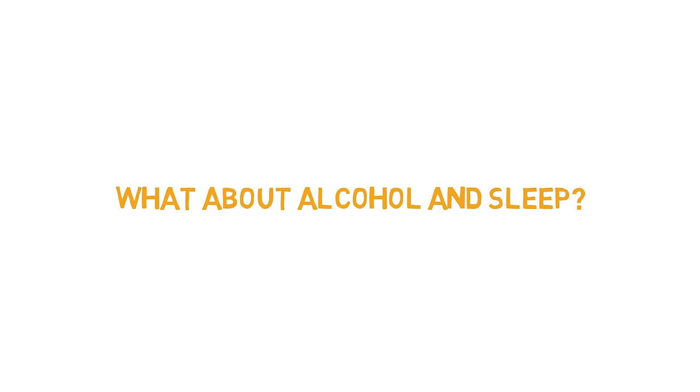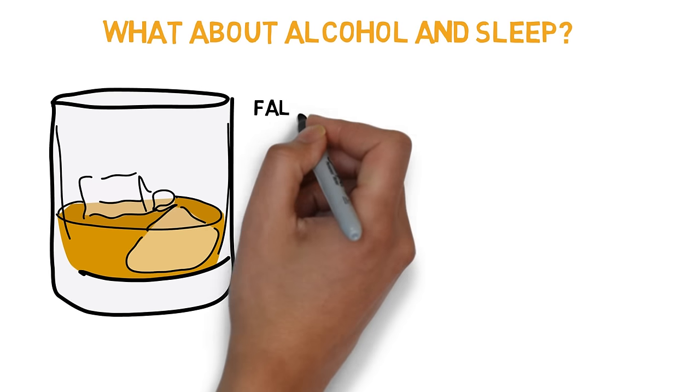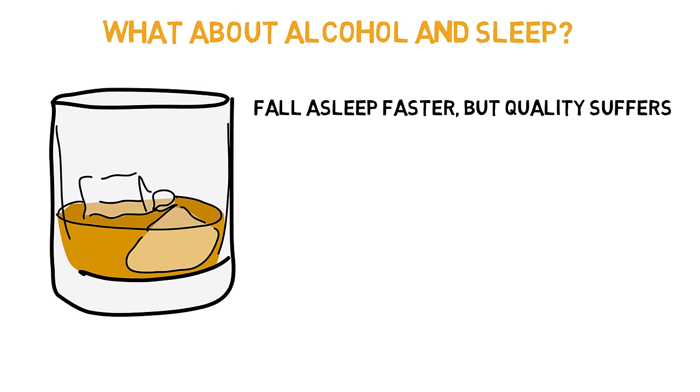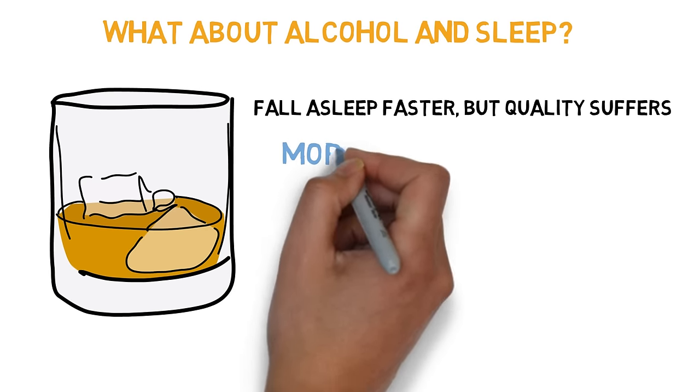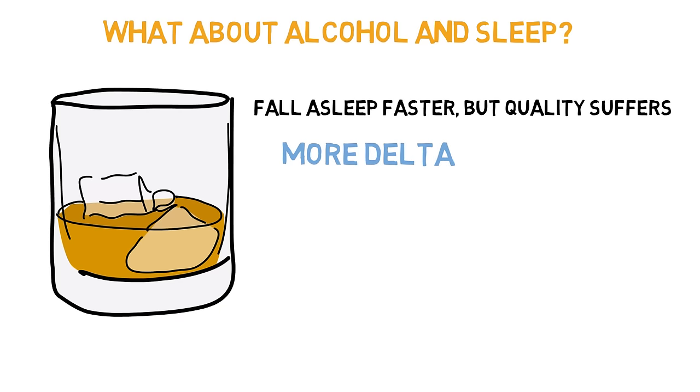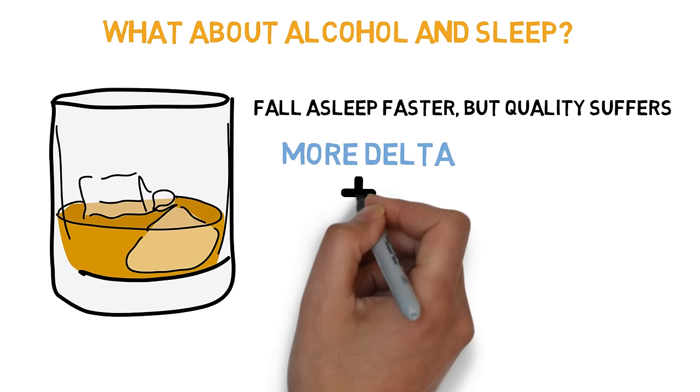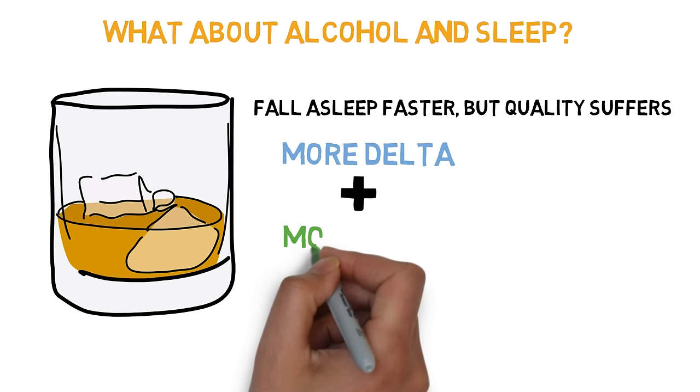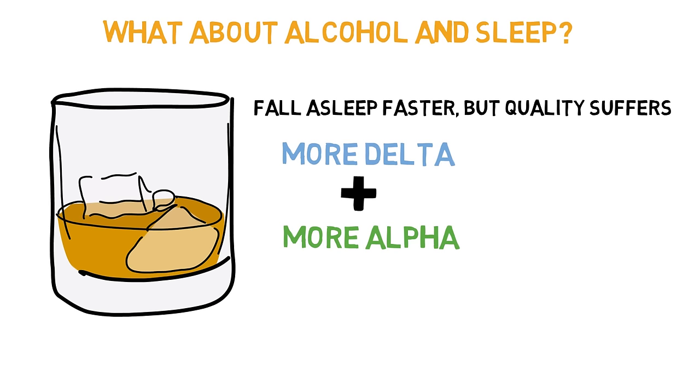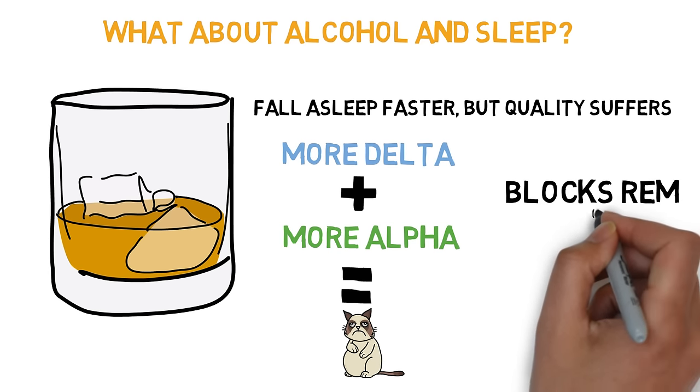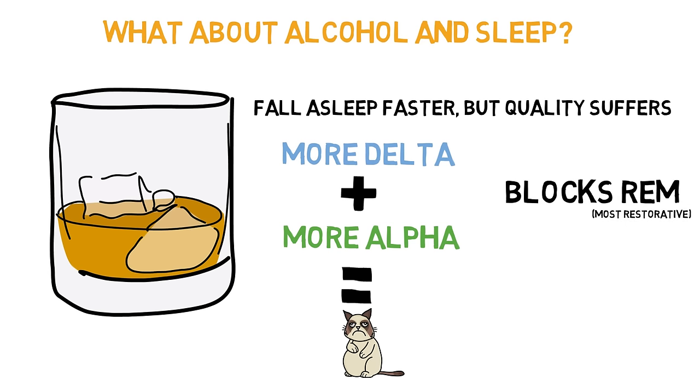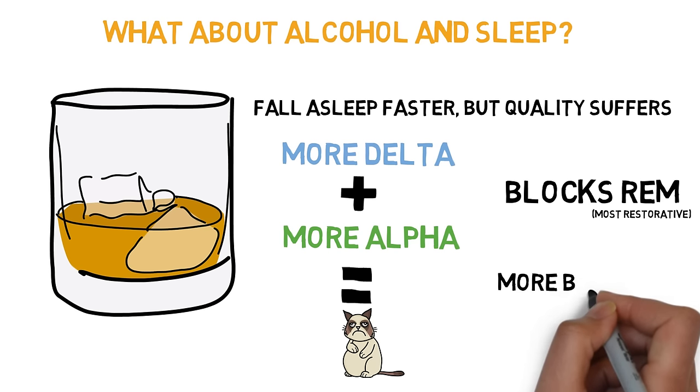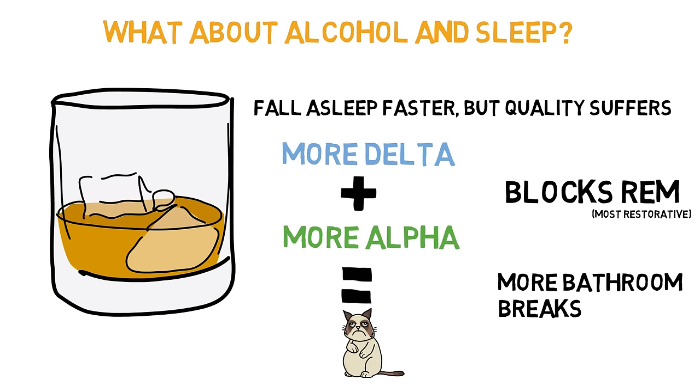Now, alcohol. Alcohol may help you fall asleep faster, but the quality of sleep suffers. It does technically increase slow-wave, delta sleep patterns, which is a good thing. But it also increases alpha activity, which generally occurs when you are resting quietly. Combined alpha and delta wave activity in the brain translates to poorer sleep. It also blocks REM sleep, which is considered to be the most restorative type of sleep. It also doesn't help that it's a diuretic and you'll be waking up to use the bathroom more frequently.